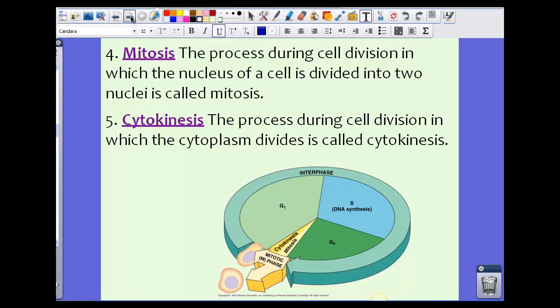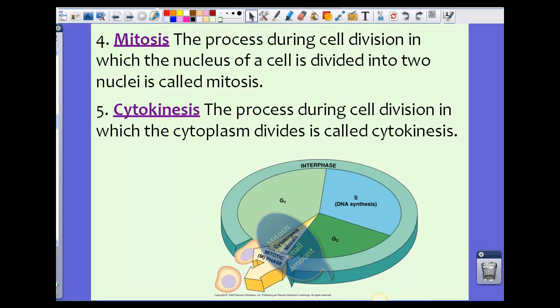Mitosis is the fourth stage of the cell cycle. This is the process during cell division in which the nucleus of a cell is divided into two nuclei. Now notice, mitosis here is very, very tiny. It doesn't spend a whole lot of time in the mitosis phase.